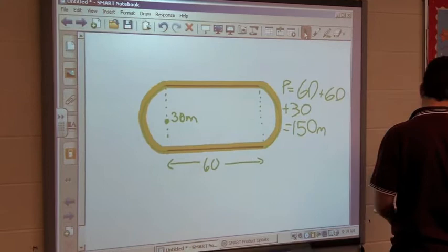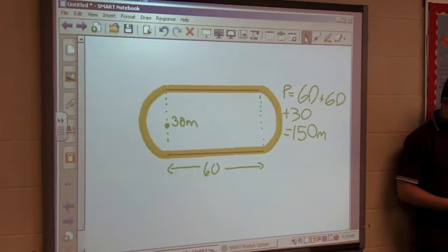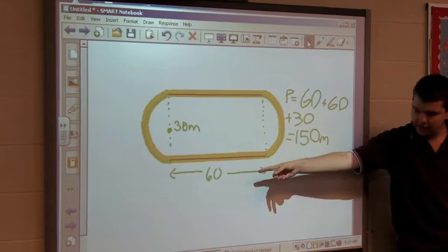Okay, so Michael thinks this is the perimeter of the shape. Explain to them what you did, Michael. And if you agree or disagree, you can tell him. Go ahead, Mike.